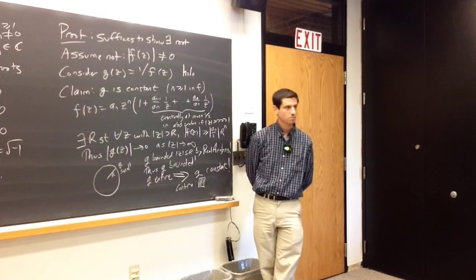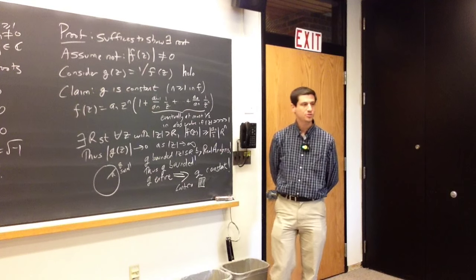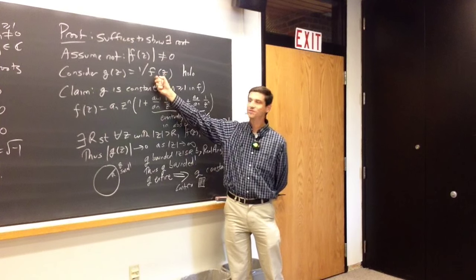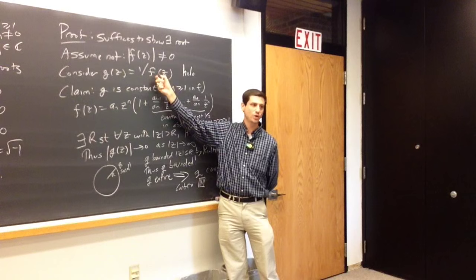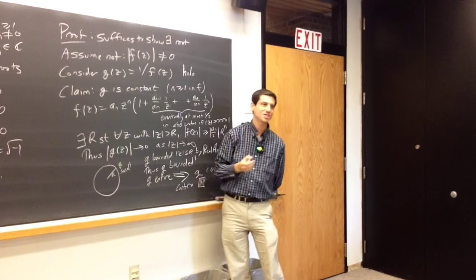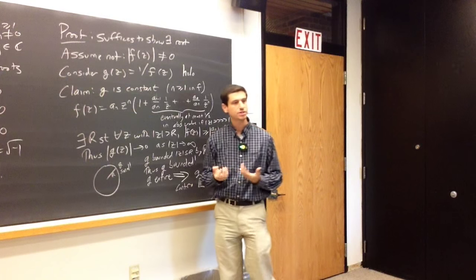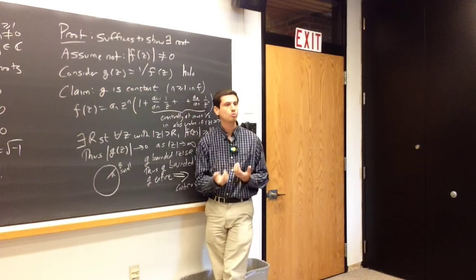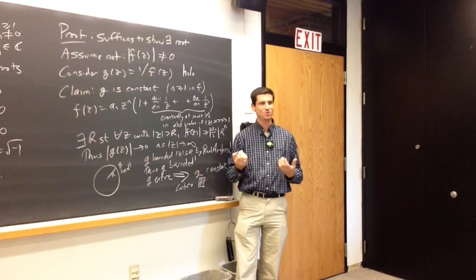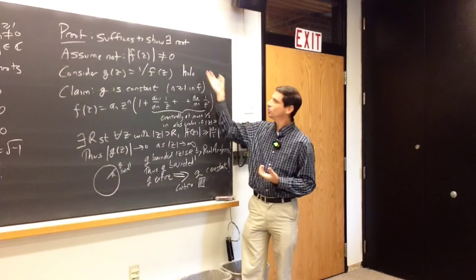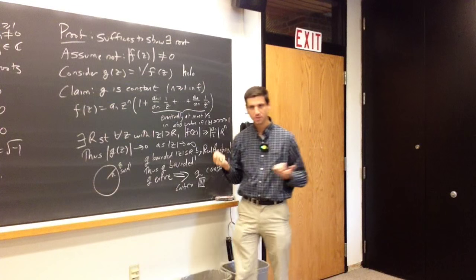Question: how do we know that 1 over f of z is holomorphic? You can go back and use the quotient rule or the inverse rule. The derivative of g is going to be negative 1 over f squared of z times f prime of z. Because f of z is never zero, our function is differentiable. Ratios of holomorphic functions are holomorphic — holomorphic just means complex differentiable. By using those old rules, we get that g is differentiable. That's the fundamental theorem of algebra.